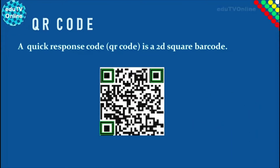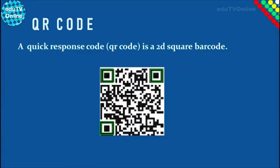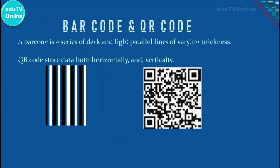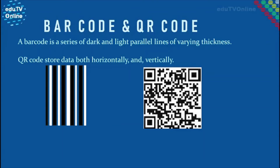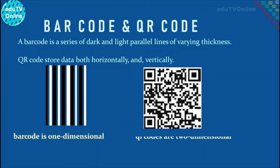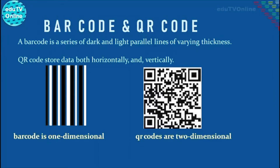These corner squares tell a QR code reader where the edges of the QR code are. A normal barcode is one-dimensional — it stores data in a line of black and white bars. QR codes are two-dimensional; they store data both horizontally and vertically.